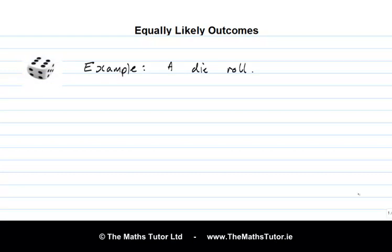Our example is our favourite example so far: a die roll. We've looked at this from various points of view in earlier lessons. Remember that the sample space is the set consisting of 1, 2, 3, 4, 5, and 6 — these are the possible outcomes when we roll a die.